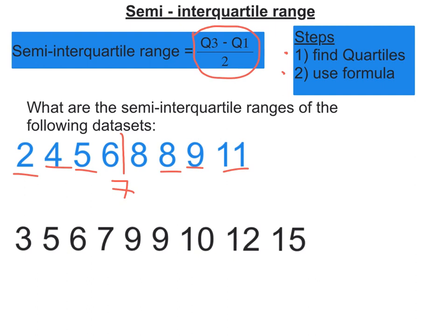Now we need to work out the median of the lower half for the lower quartile. That's going to go there. That is 4.5. So Q1 is 4.5.